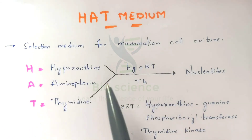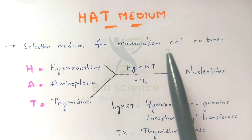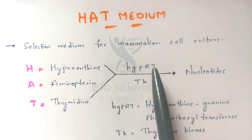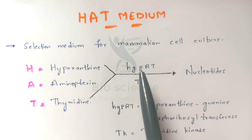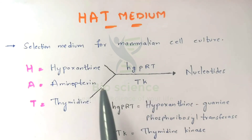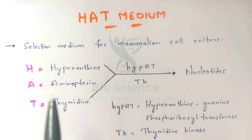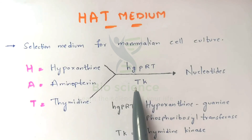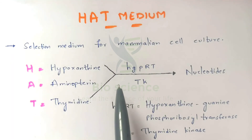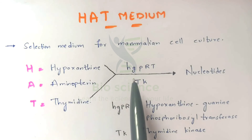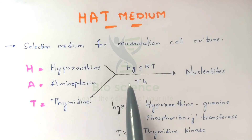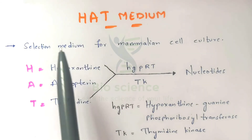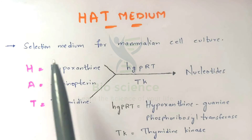HAT medium is a selection medium or screening medium for mammalian cell culture. In the process of mammalian cell culture, you take two mammalian cells, conduct an experiment on them, and obtain a hybrid cell. But a group of cells will be present, and the hybrid cell will be among them — so you need to identify it. That source of identification is HAT medium.